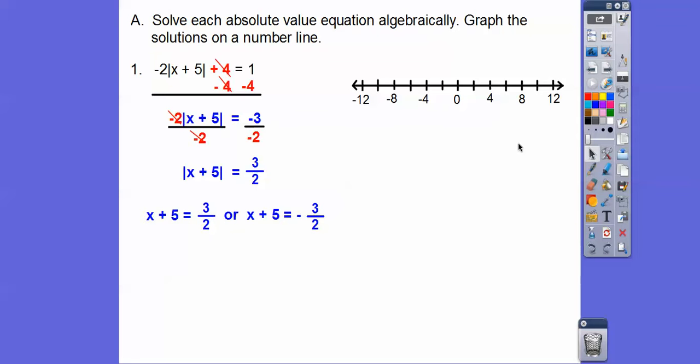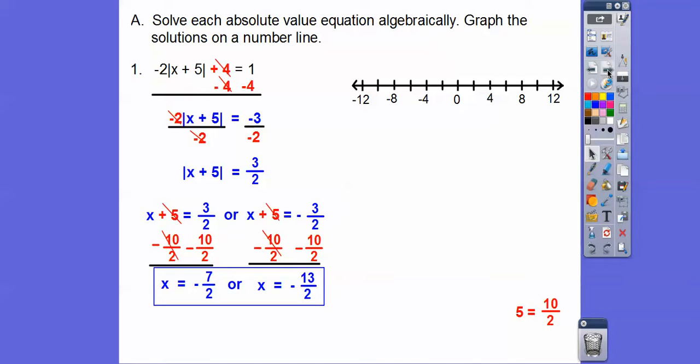We're going to subtract 5. Since these are in terms of halves, I changed 5 to 10 halves. You can see that down here. 5 equals 10 halves. So subtract 10 halves on both sides. 3 minus 10 is negative 7. Negative 3 minus 10 is negative 13. So we get negative 7 halves and negative 13 halves. For graphing purposes, this is negative 3 and a half, that's negative 6 and a half. There they are being graphed right there.